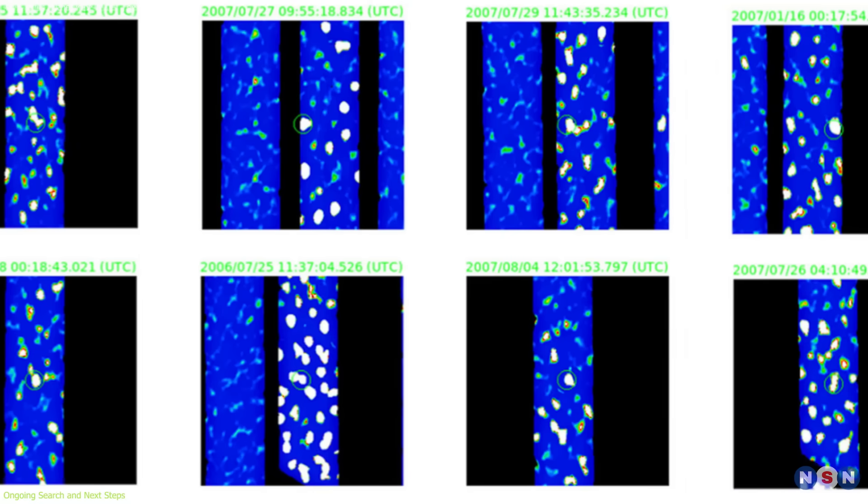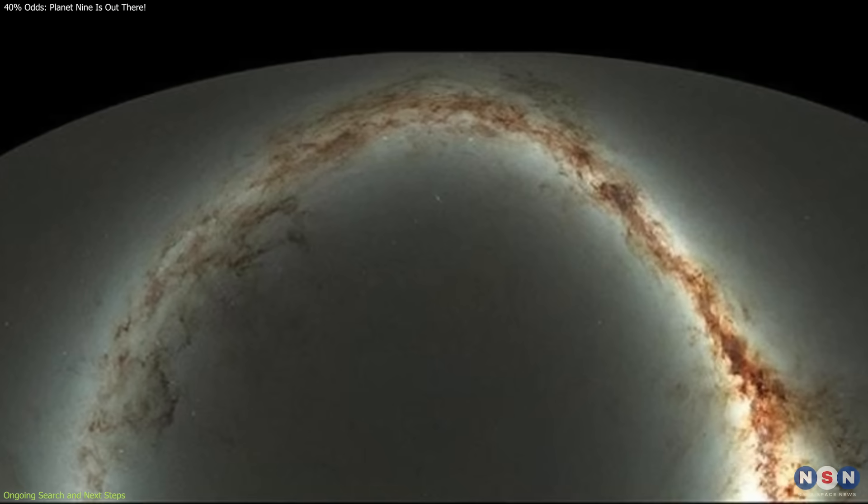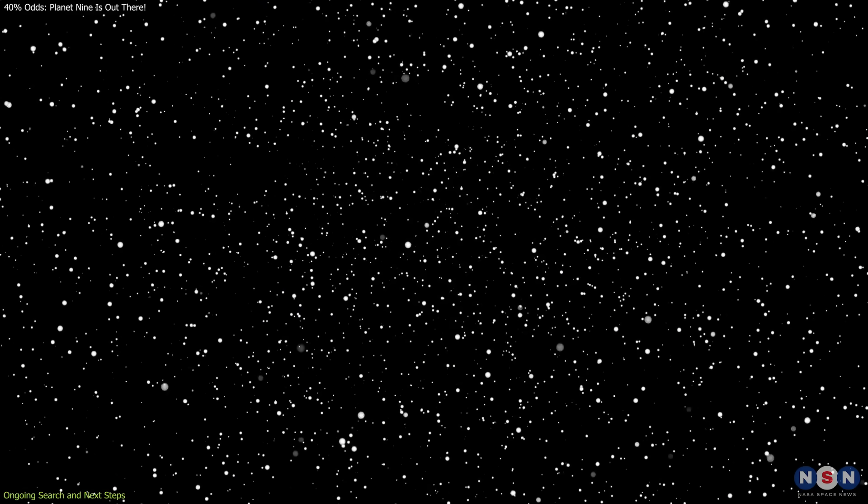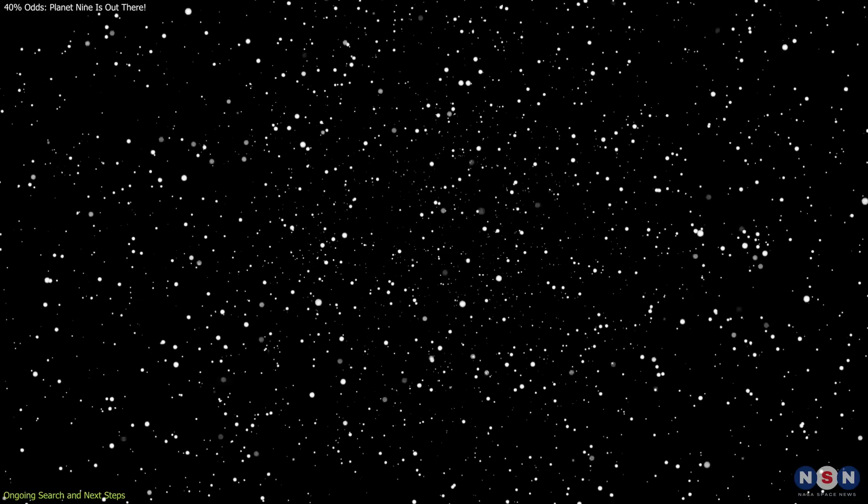Previous attempts, including those using data from WISE and PAN-STARRS, have ruled out some regions of the sky, but large gaps remain. The region where Planet 9 is most likely to be located is vast, and searching it thoroughly requires both time and precision.